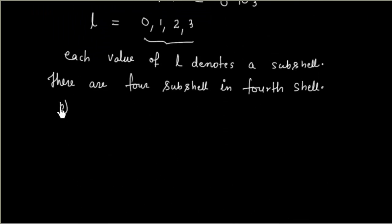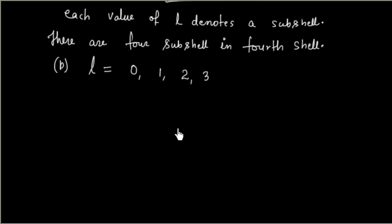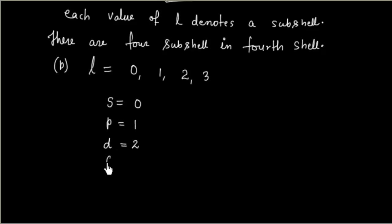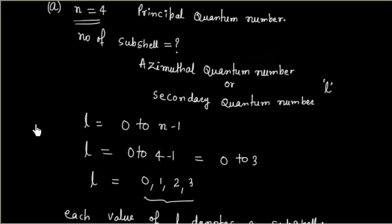If you remember, the S subcell is denoted by l equal to 0, P subcell by l equal to 1, D subcell by l equal to 2, and F subcell by l equal to 3. So for each subcell we have corresponding numerical values: 0 for S, 1 for P, 2 for D, and 3 for F.